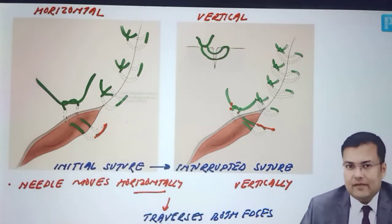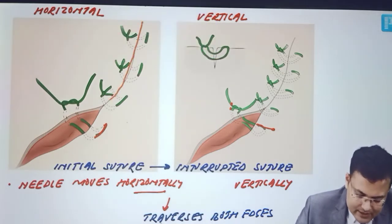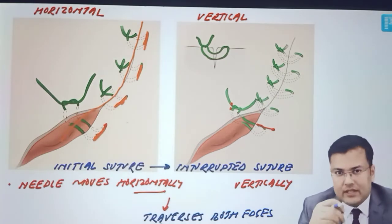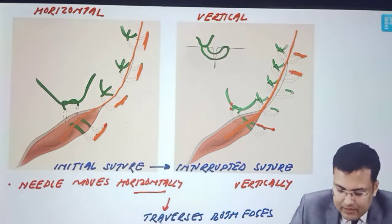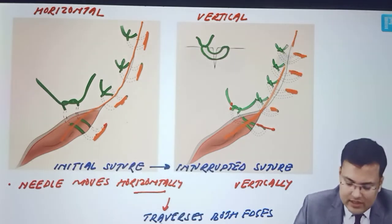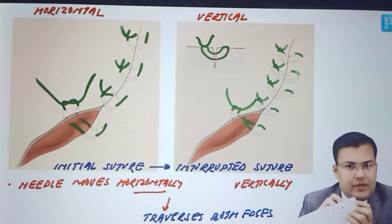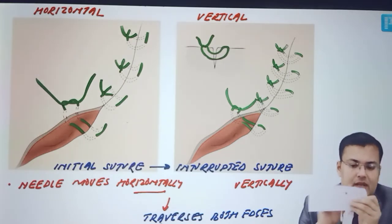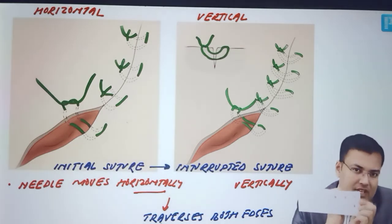The easiest method to identify them in an exam image-based question: this is the line of incision. In horizontal mattress, the suture is parallel to the line of incision. In vertical mattress, it is perpendicular to the line of incision. So this is how you can easily identify horizontal and vertical mattress. The needle pierces both edges, moves horizontally for horizontal mattress — you tie the knot and that is horizontal mattress. If the needle moves vertically, that is vertical mattress.